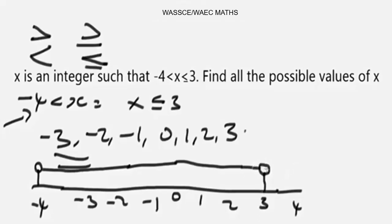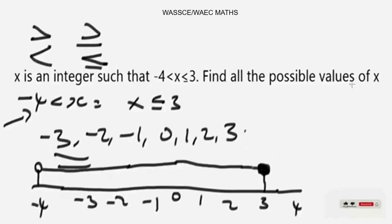Take note: when you reach the boundary, you shade that region. In this case, since we have 'x ≤ 3' (less than or equal to), you shade that endpoint. When there is only a strict less than or greater than sign — without the 'equal to' — you do not shade. You shade only when you have '≤' or '≥' on the number line.